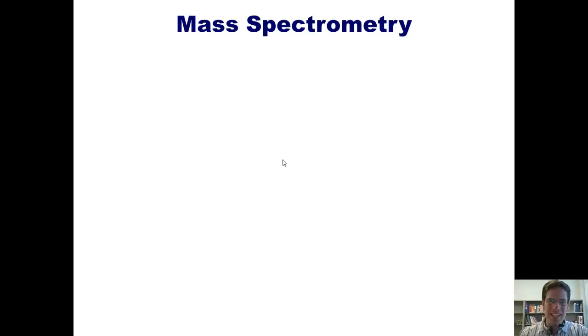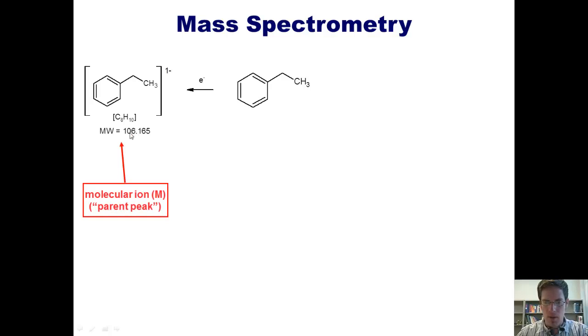Now to show an illustrative real-life example, let's pretend that we threw ethyl benzene into a mass spectrometer. It's possible that some of the molecules of ethyl benzene in our sample might get bombarded by a single electron to give this molecule, which would then come out of the column to give a molecular weight of 106.165. Because this molecule has the same molecular weight as the original structure from which it came, it's called the molecular ion, or sometimes also called the parent ion, or parent peak.